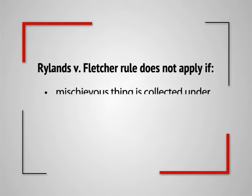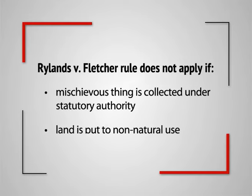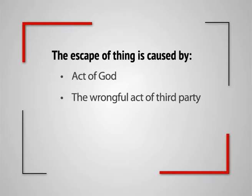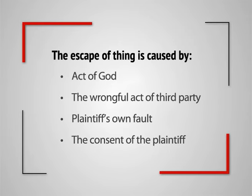Now, the exceptions to this doctrine. The rule of Rylands v. Fletcher has been applied in later cases to gas, electricity, oil, noxious fumes, colliery spoil, rusty wire from a decayed fence, vibrations, poisonous vegetation, and flagpoles. This rule does not apply if the mischievous thing is collected under statutory authority, if the land is put to non-natural use, if the escape of the thing is by act of God, by the wrongful act of a third party, by the plaintiff's own fault, or by the consent of the plaintiff. In such cases the defendant cannot be made liable under no-fault liability. Let us discuss these exceptions briefly.